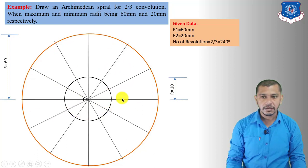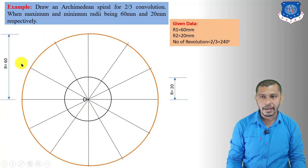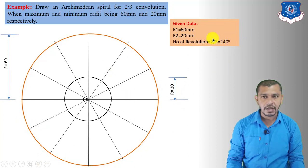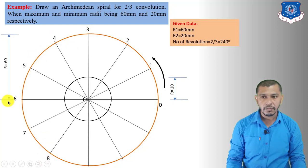Divide the circles into 12 equal parts. Give numbering in the anticlockwise direction up to 240 degrees only — not 360 or 720 degrees. So number: 0, 1, 2, 3, 4, 5, 6, 7, 8. From 0 to halfway is 180 degrees, then 210 degrees, and 240 degrees at division 8. Give the numbering up to 8 divisions only.